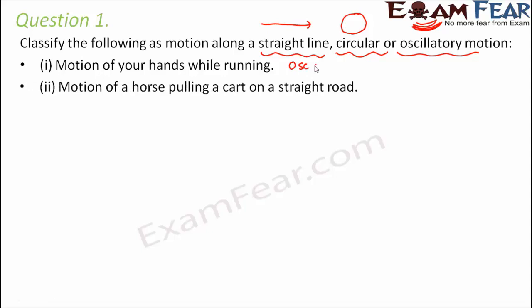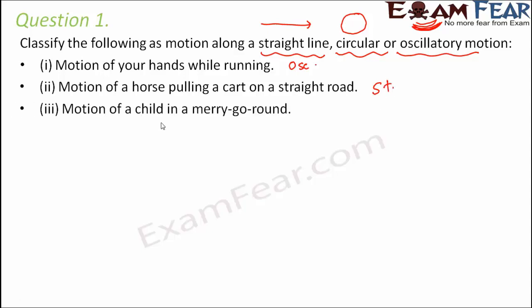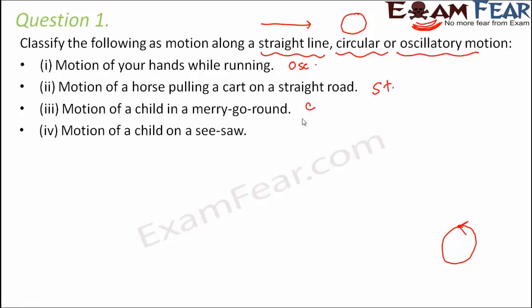Motion of a horse pulling a cart on a straight road: since the road is straight, the horse will pull the cart along the straight road, which is rectilinear or straight-line motion. Motion of a child in a merry-go-round: a merry-go-round moves in circles, so this is circular motion.